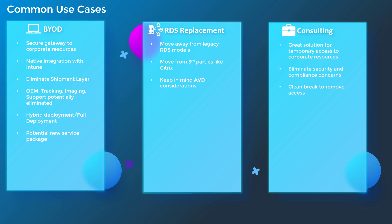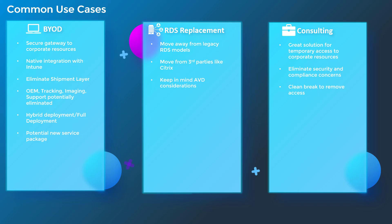RDS replacement is another heavy consideration. Moving away from legacy RDS models that Microsoft provided in the past with ProPlus and into this new deployment could save costs or drive new efficiencies. You could also move off of third parties like Citrix, which has provided a lot of headaches over time, or other VDI providers you may be using today. Switching costs might not be too high, and you could save a lot of operational costs in the long term by moving to this solution.